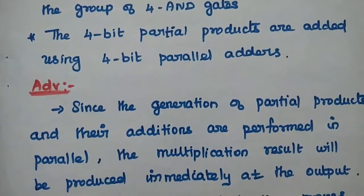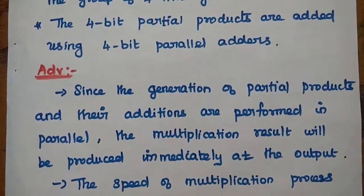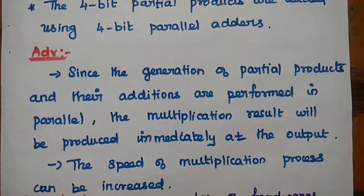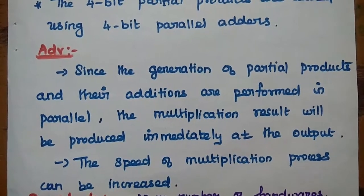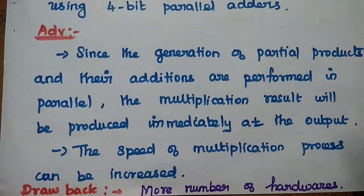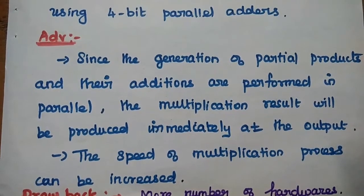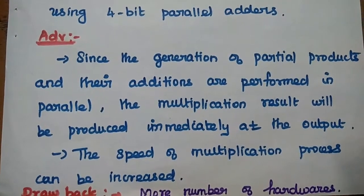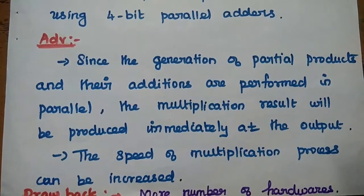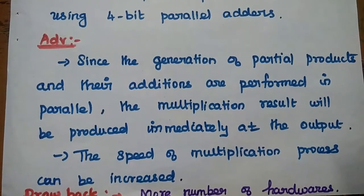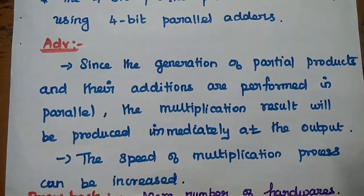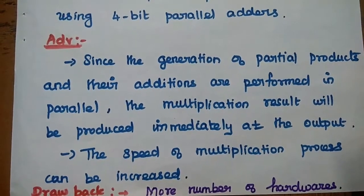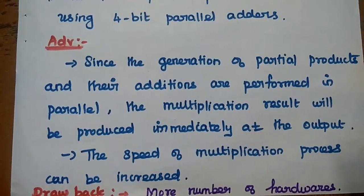The major advantage of the parallel multiplier is that since the generation of partial products and their additions are performed in parallel simultaneously, the multiplication result is produced immediately at the output. The speed of the multiplication process is increased. However, the drawback is that more hardware is needed — 4-bit binary adders and 16 AND gates for 4-bit multiplication — and as the number of bits increases, the hardware required also increases.